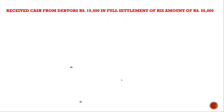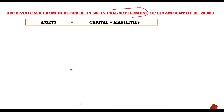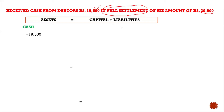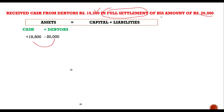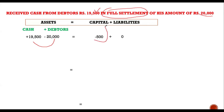Moving to the next slide: received cash from debtors rupees 19,500 in full settlement of his amount of rupees 20,000. The debtor owed 20,000 but in full settlement only 19,500 was received — the dues are cleared. It is a loss for the business: the amount receivable was 20,000 but only 19,500 was received. Cash increases by 19,500 while the debtor asset decreases by 20,000 — we have a negative balance of rupees 500 due to discount allowed, which is a loss and will be subtracted from the capital of the owner.